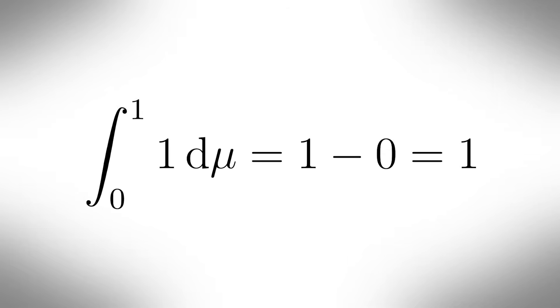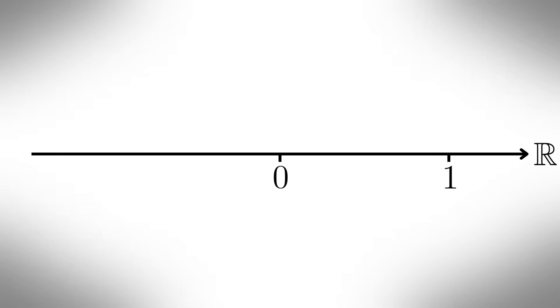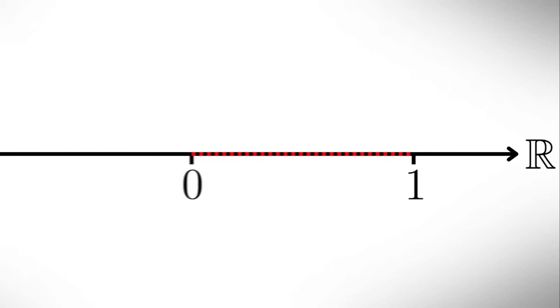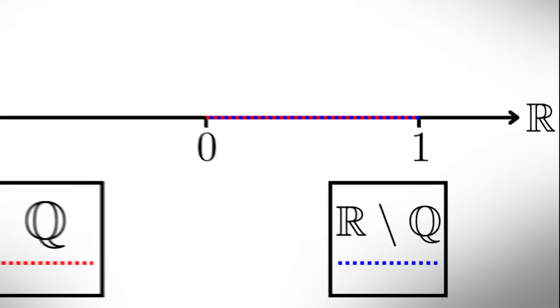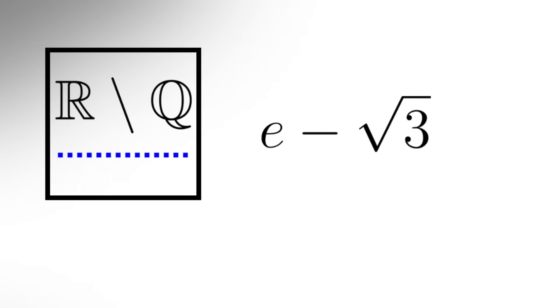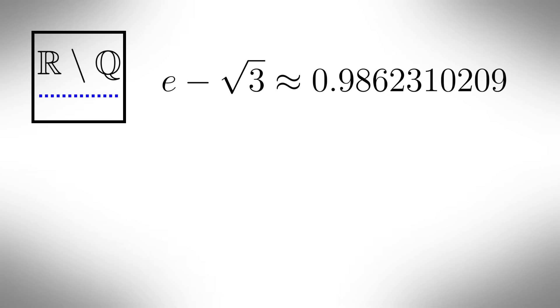Vitali sets. Giuseppe Vitali invented a set that has no size. To find the numbers in this set, first take the real number line from 0 to 1, and put all the rational numbers in a box, and then put all the irrational numbers in another bigger box.